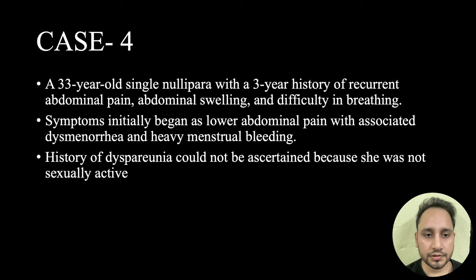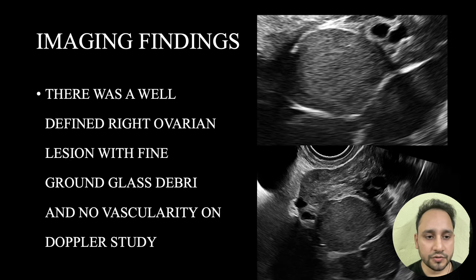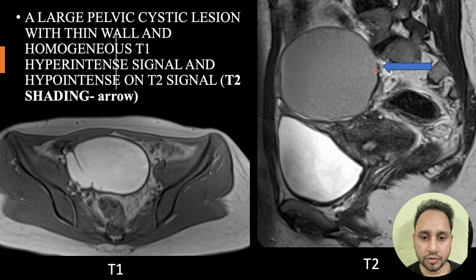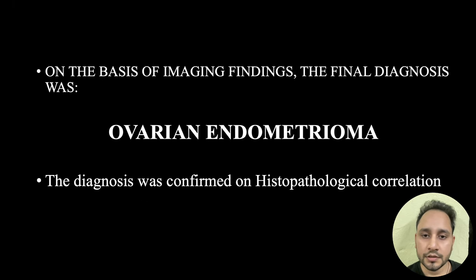Case 4. A 33-year-old single nullipara with a 3-year history of recurrent abdominal pain, abdominal swelling, and difficulty in breathing. Symptoms initially began as lower abdominal pain with associated dysmenorrhea and heavy menstrual bleeding. History of dyspareunia could not be ascertained because she was not sexually active. Imaging findings: there was a well-defined right ovarian lesion with fine ground-glass debris and no vascularity on color Doppler study. On MRI, a large pelvic cystic lesion with thin wall and homogeneous T1 hyperintense signal and hypointense T2 shading sign was seen. The lesion is hyperintense on T1 and shows shading on T2. On the basis of imaging findings, the final diagnosis was ovarian endometrioma, confirmed on histopathological correlation.